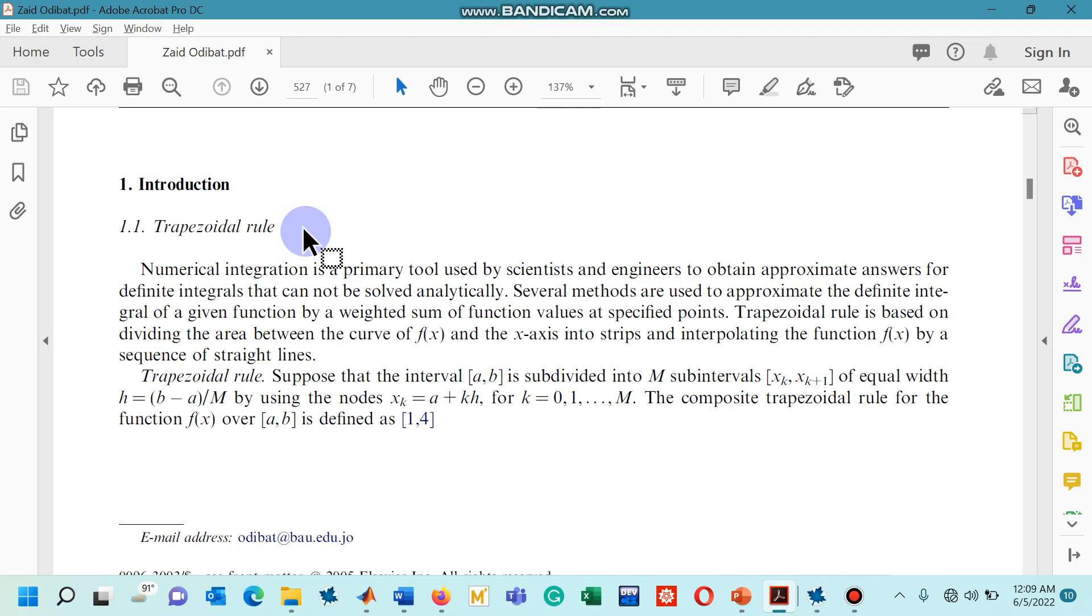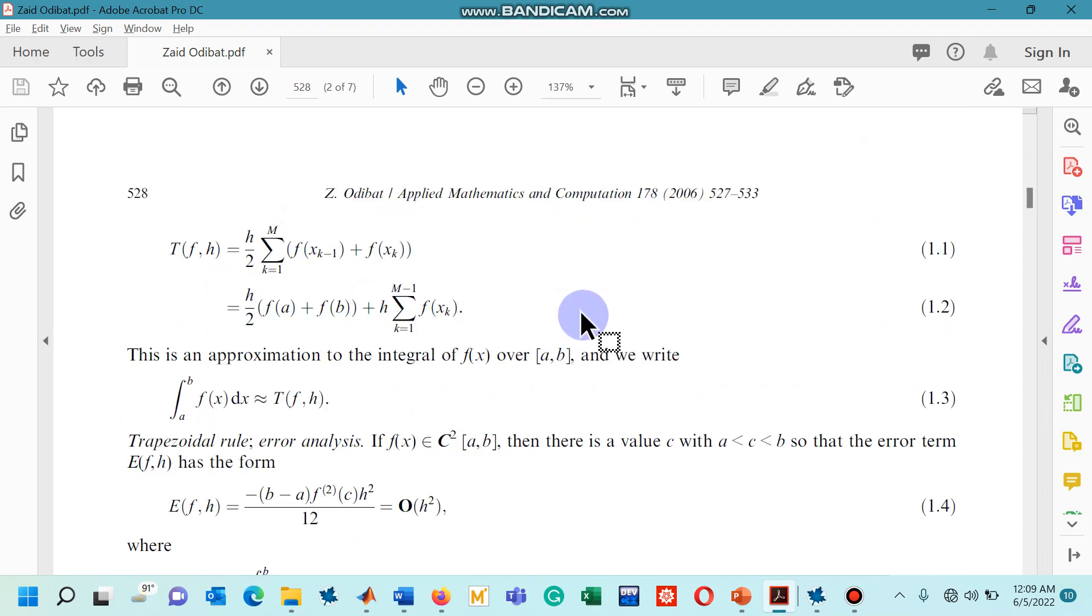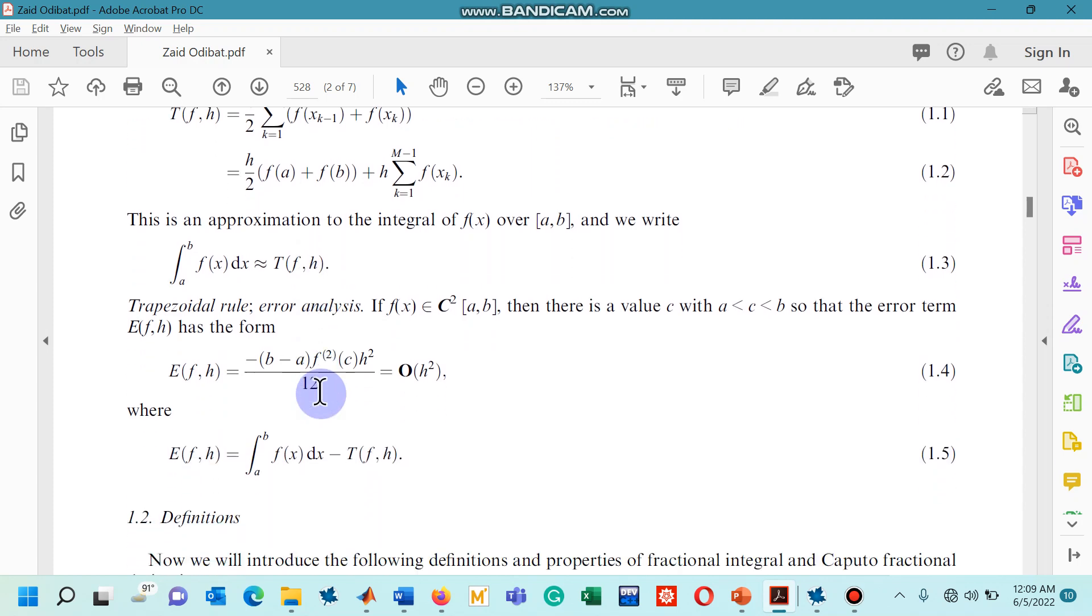In this subsection, some short overview is given and as you can see the classical trapezoidal rule is given by equation 1.2. Equation 1.3 says that both answers are equal or approximately equal to each other. In 1.4, you can see the error term in the trapezoidal rule and 1.5 gives you the formula for the computation of error: exact minus the answer from the trapezoidal rule.